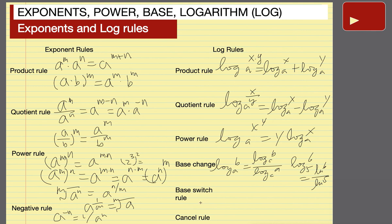Base switch rule says that the log base a of b is equal to 1 over the base b log of a.